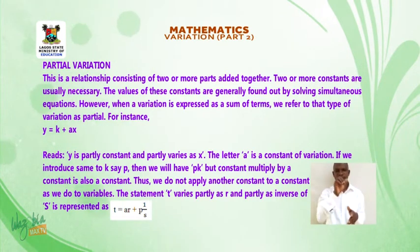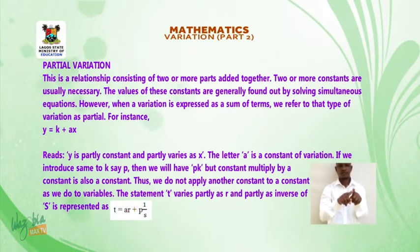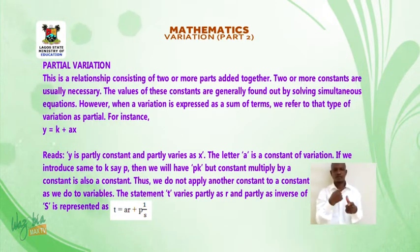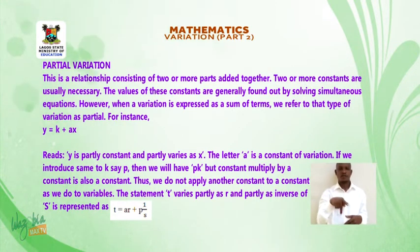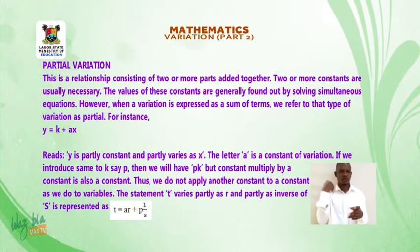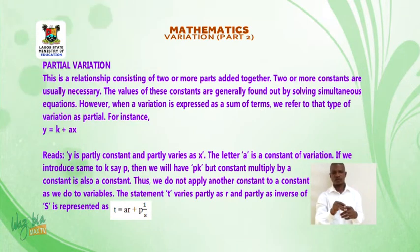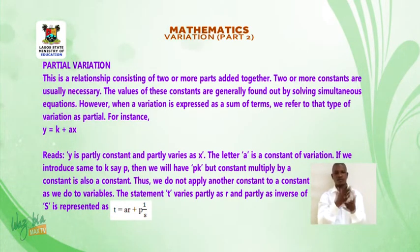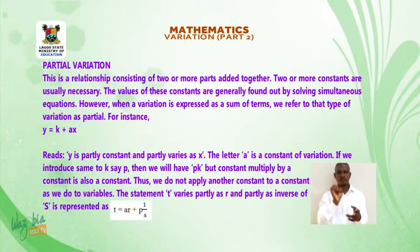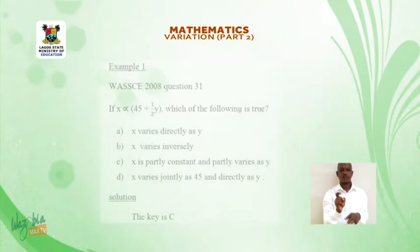The letter a is a constant of variation. Note that a constant multiplied by a constant is also a constant, so we do not apply another constant to a constant as we do to variables. The statement 't varies partly as r and partly as the inverse of s' is represented as t is equal to ar plus p times 1 over s.